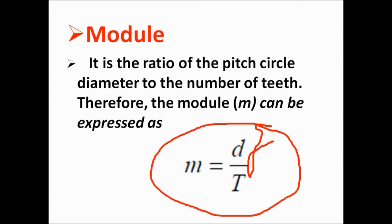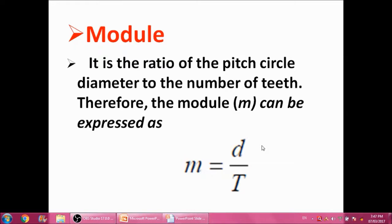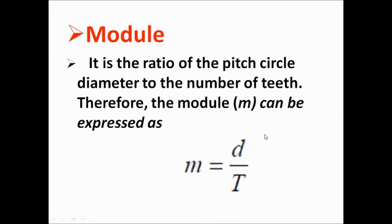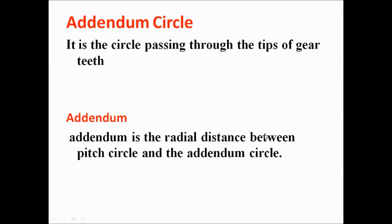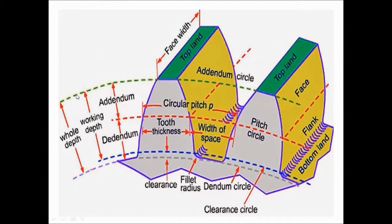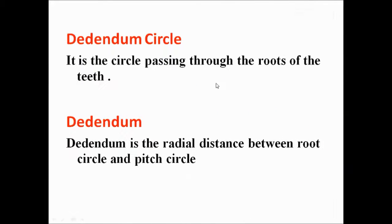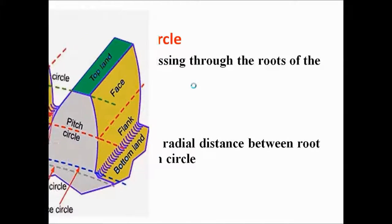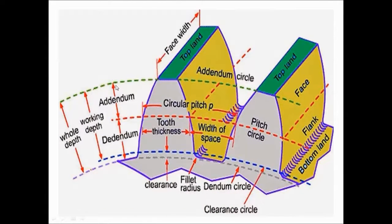The addendum circle passes through the tips of the gear teeth. Addendum is the radial distance between the pitch circle and the addendum circle.